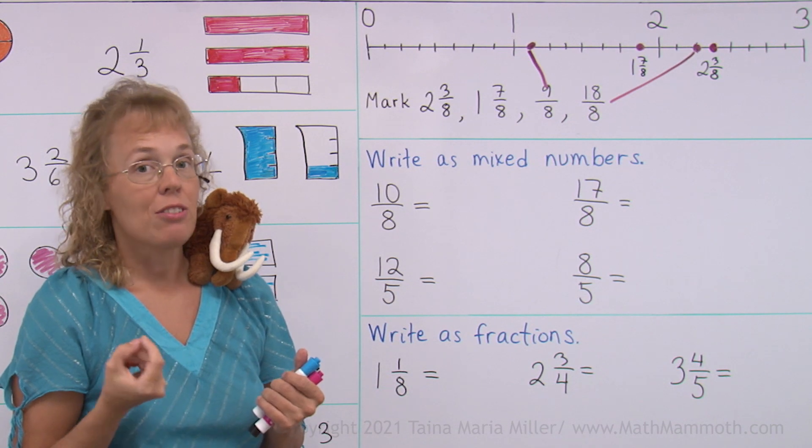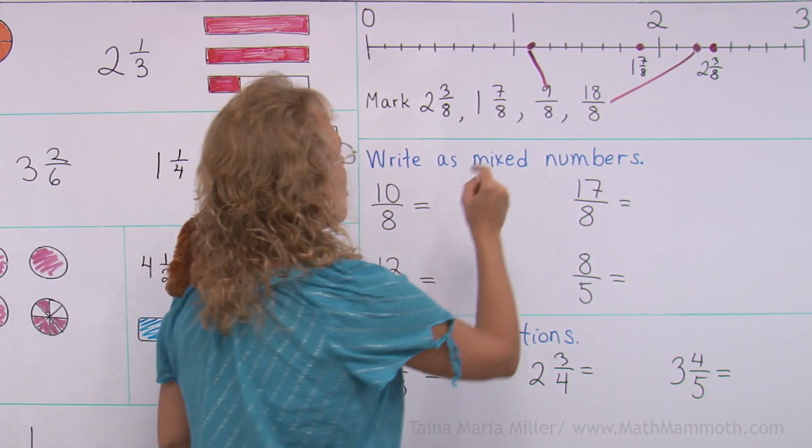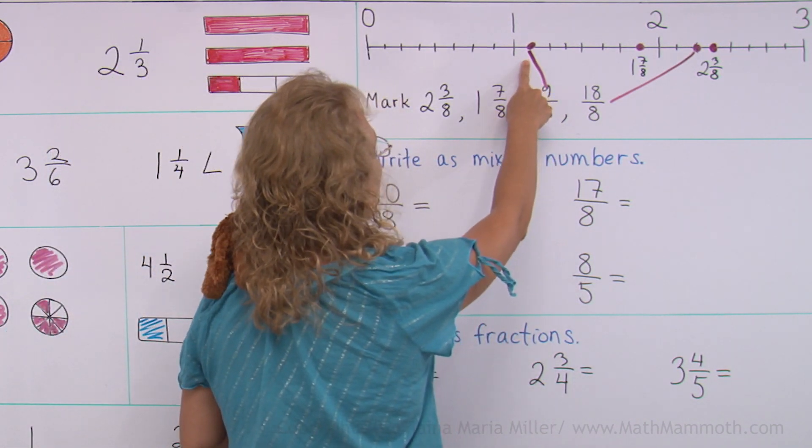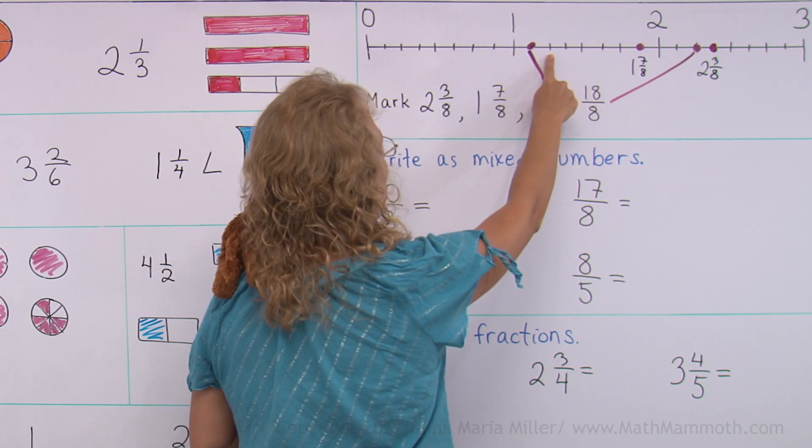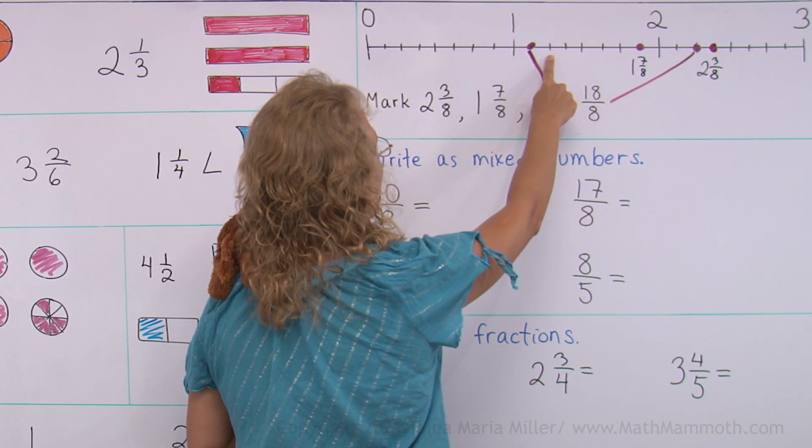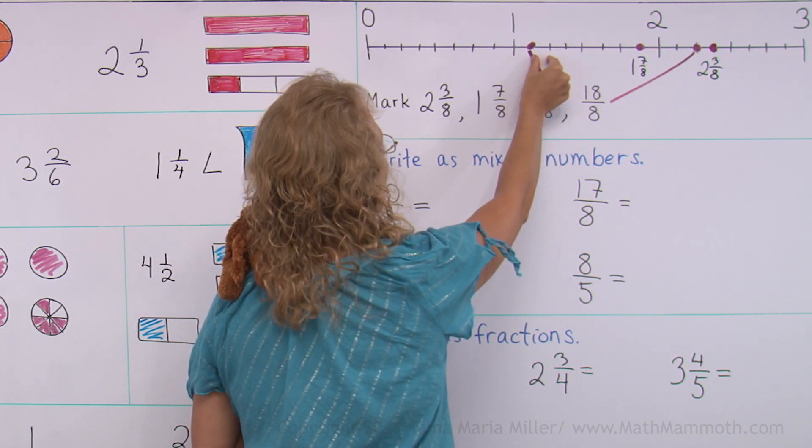I can also see that from the number line. Here I marked 9 eighths. This here is 10 eighths, right? But it is also exactly 2 eighths more than 1.